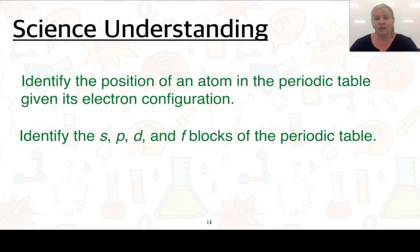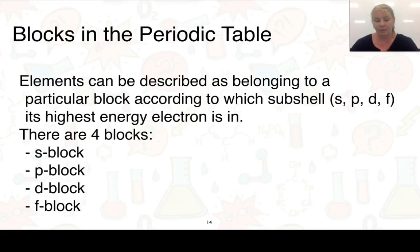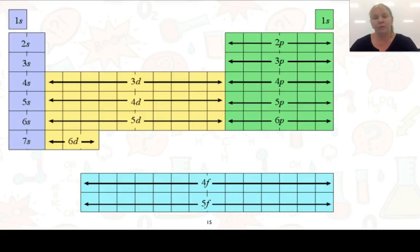Next we've got to look at identifying the position of an atom in the periodic table given its electron configuration. In one of the videos that we looked at before, we already have found the S, P, D, and F blocks in the periodic table. You can describe their position determined by the subshell that their highest energy electron is in. The blocks we are looking at are S, P, D, and F, and you would recognize this diagram from when we did electron configurations.